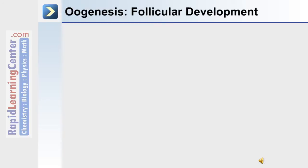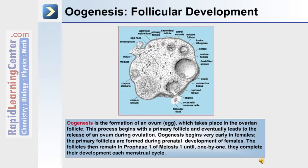Oogenesis, or the formation of a female gamete, occurs during follicular development. Oogenesis is the formation of an ovum or egg, and this takes place in the ovarian follicle. The process begins with a primary follicle and eventually leads to the release of an ovum during ovulation. Oogenesis begins very early in females, and the primary follicles are formed during prenatal development. The follicles then remain in prophase 1 of meiosis 1 until one by one they complete their development each menstrual cycle during adult life.